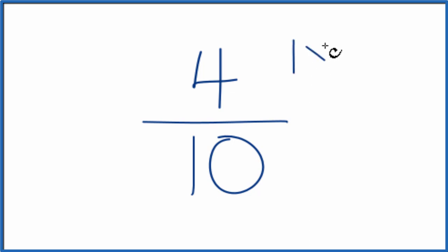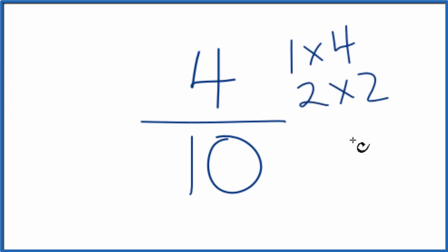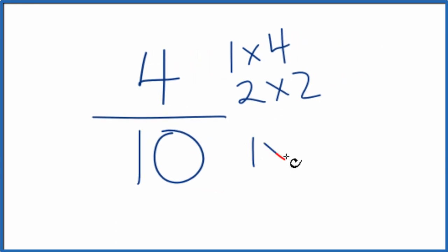For 4, we could have 1 times 4, that equals 4, and 2 times 2, that equals 4. For 10, 1 times 10, 2 times 5, and actually that's all.